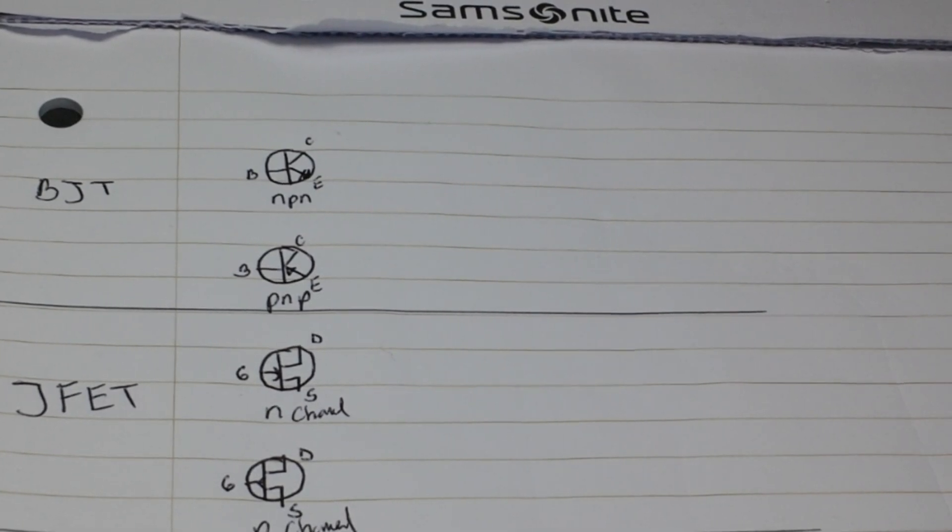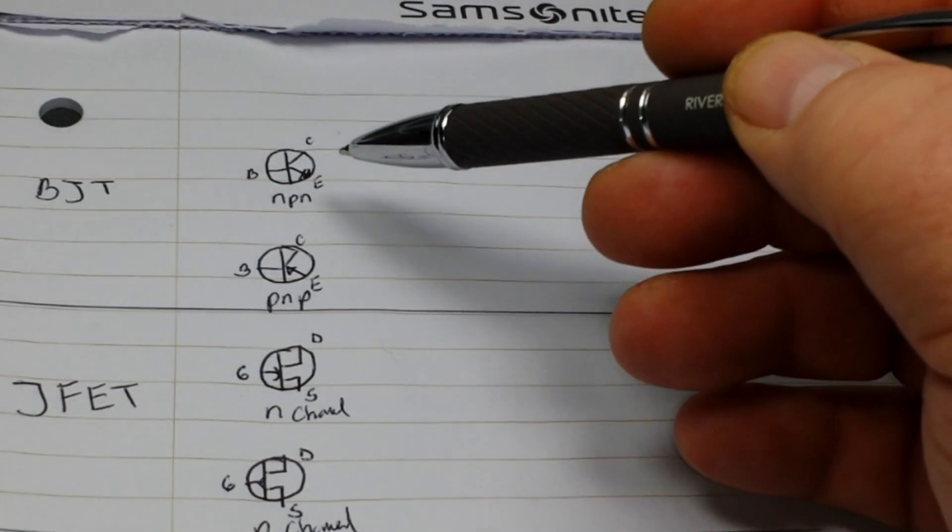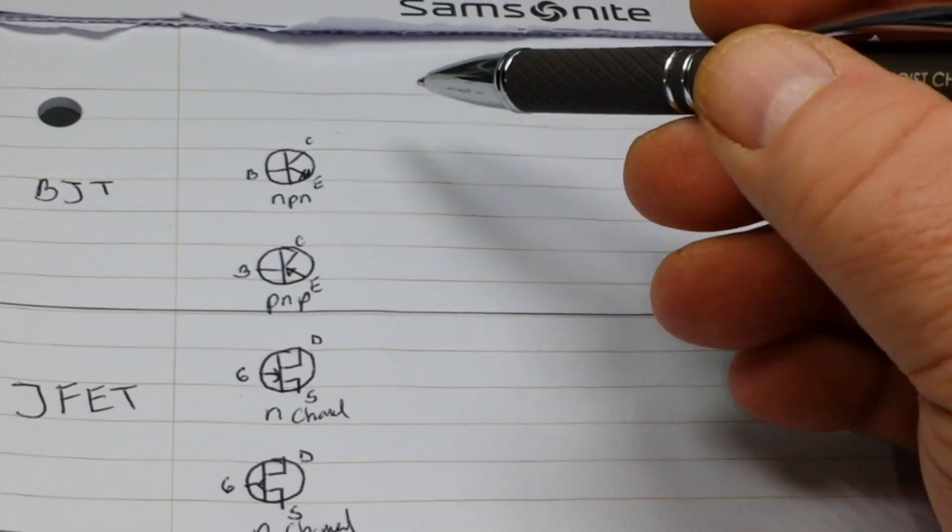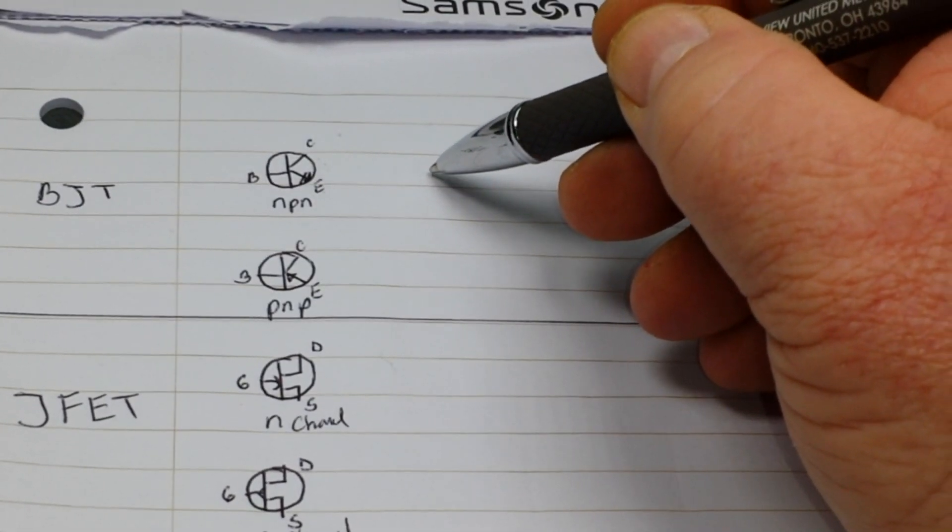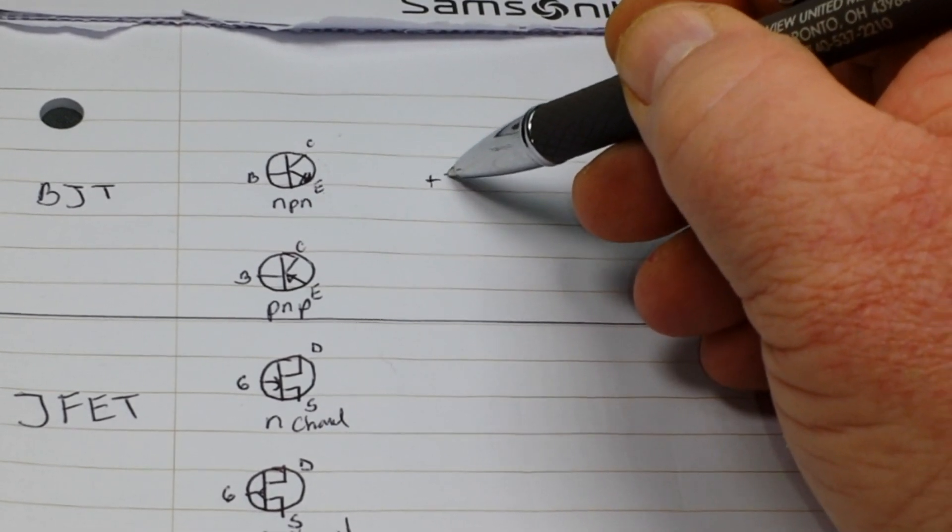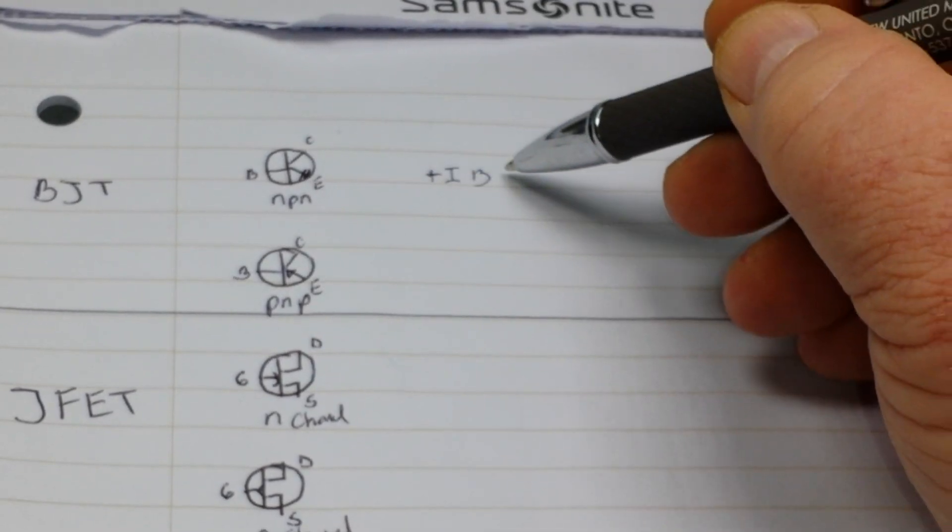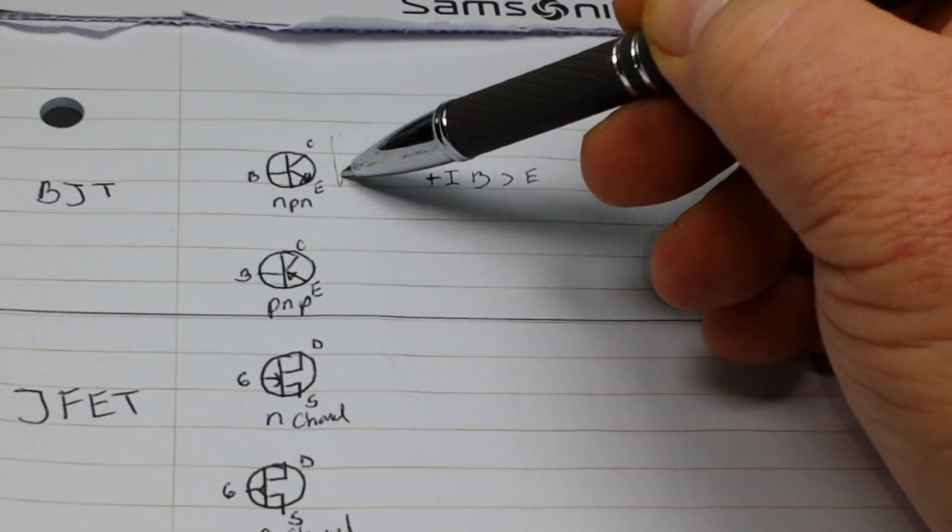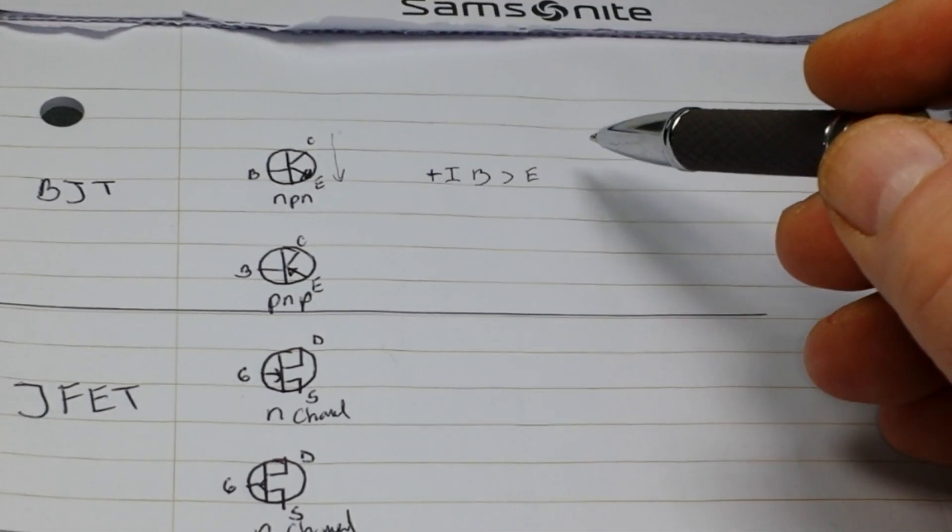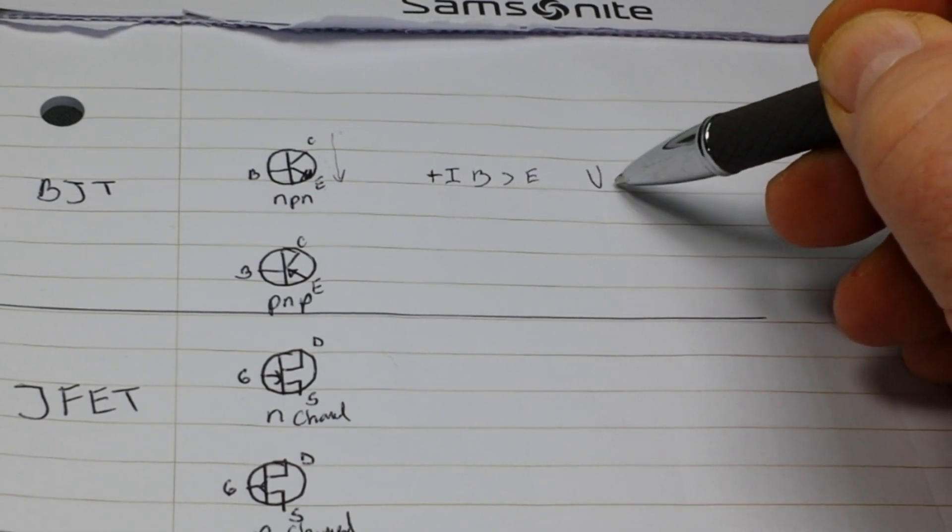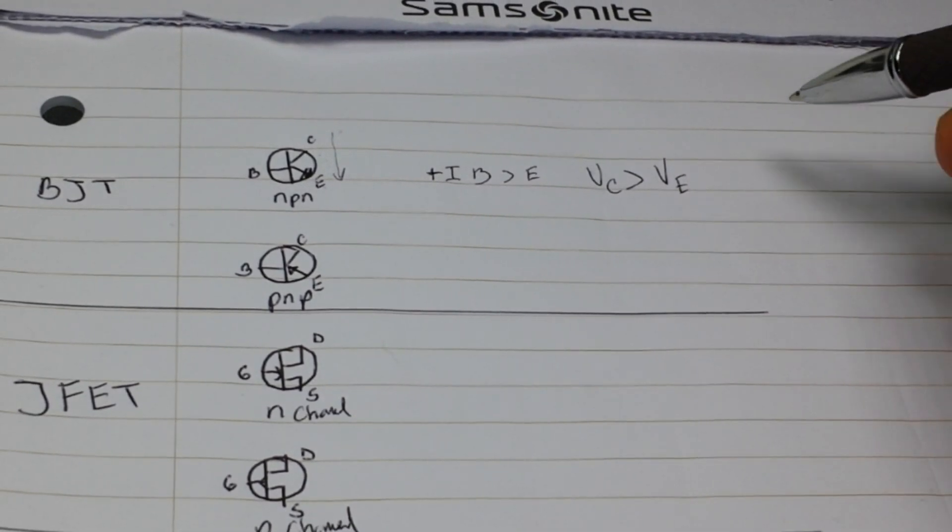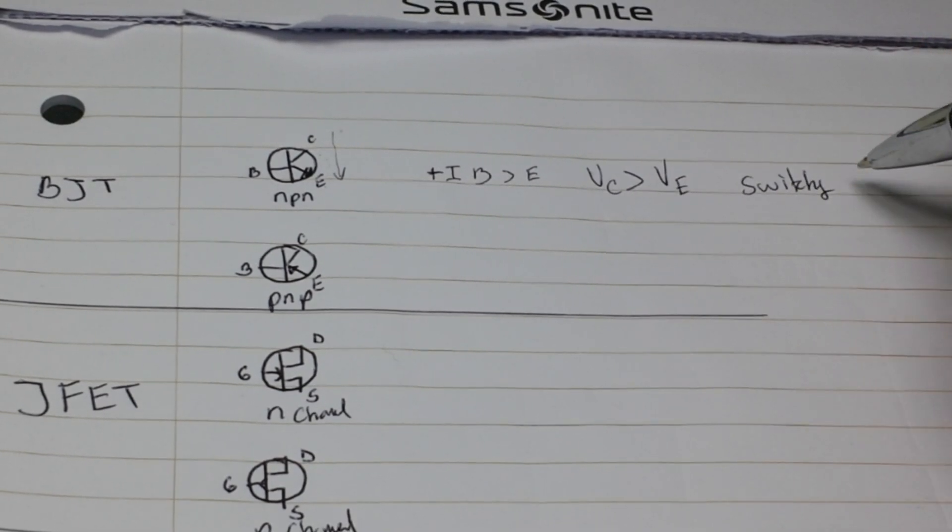Let's start with the bipolar junction transistors that we all know and love, your BC547 2N2222. And we'll start with the NPN. Of course for BJTs we have a base, a collector and an emitter. And a small positive current at the base relative to the emitter allows a larger current to flow from the collector to the emitter.